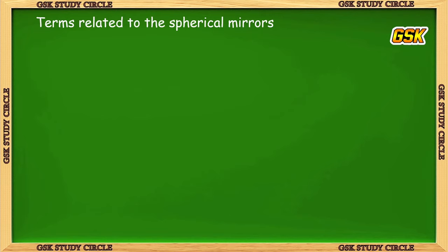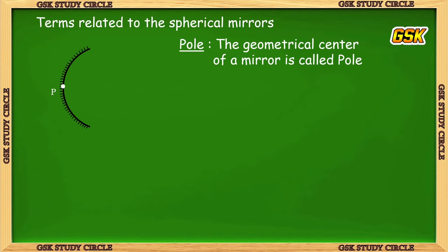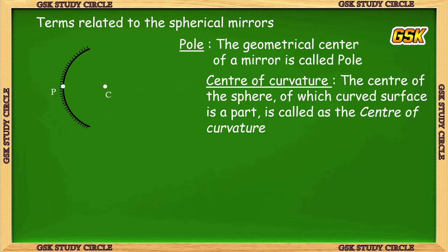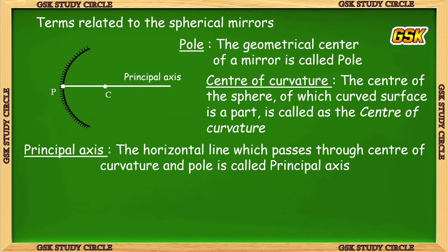Terms related to spherical mirrors: First, point P — the pole. The geometrical center of the mirror is called the pole, denoted with capital P. Next, the center of curvature — since the mirror is part of a sphere, that sphere has a center, which is called the center of curvature, denoted with C. The line which passes through the pole and center of curvature is called the principal axis.